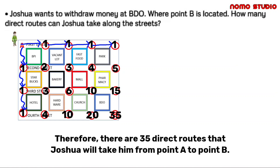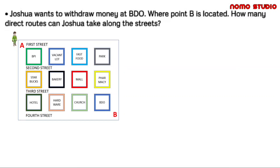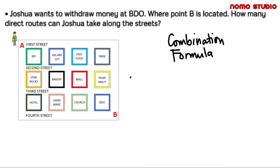But how about if we try to solve this using a mathematical formula? Since we are dealing with counting the total number of direct routes, we will use the combination formula for counting and probability: N taken R equals N factorial over R factorial times the quantity N minus R factorial.